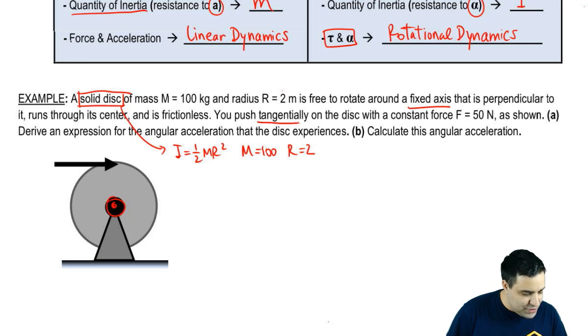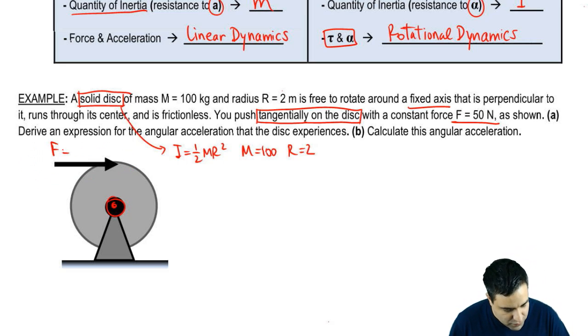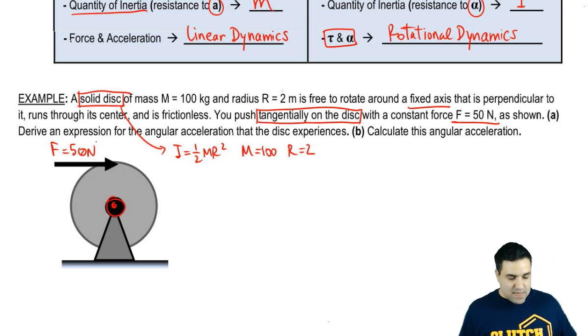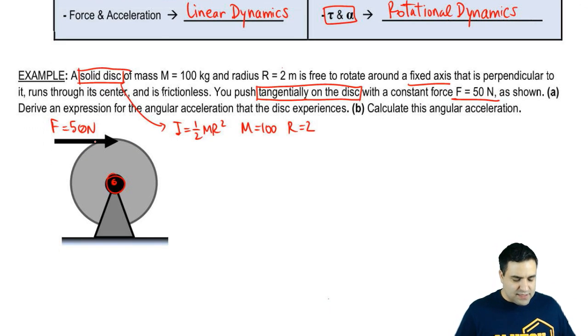You push tangentially on the disk. If you push tangentially on the disk, it looks like this, like sort of at the edge of the disk with a constant force of 50. So let me write this here. F equals 50 newtons. We want to derive an expression for the angular acceleration that the disk experiences. So part A, we want to find alpha.